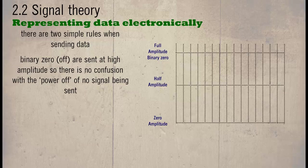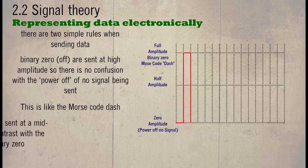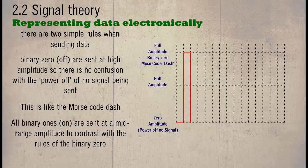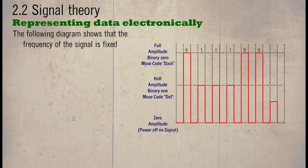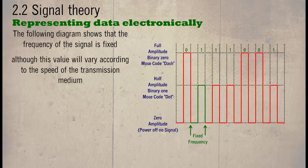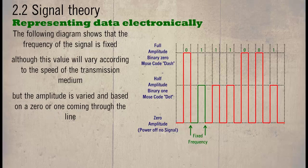All binary zeros are sent at a high amplitude so that there is no confusion with the power off or no signal being sent. This is like the Morse code dash. All binary ones are sent at mid-range amplitude to contrast with the rules of the binary zero. This is like the Morse code dot. The following diagram shows that the frequency of the signal is fixed. Although this value may vary according to the speed of the transmission medium, the amplitude is varied and based on a zero or one coming through the line.